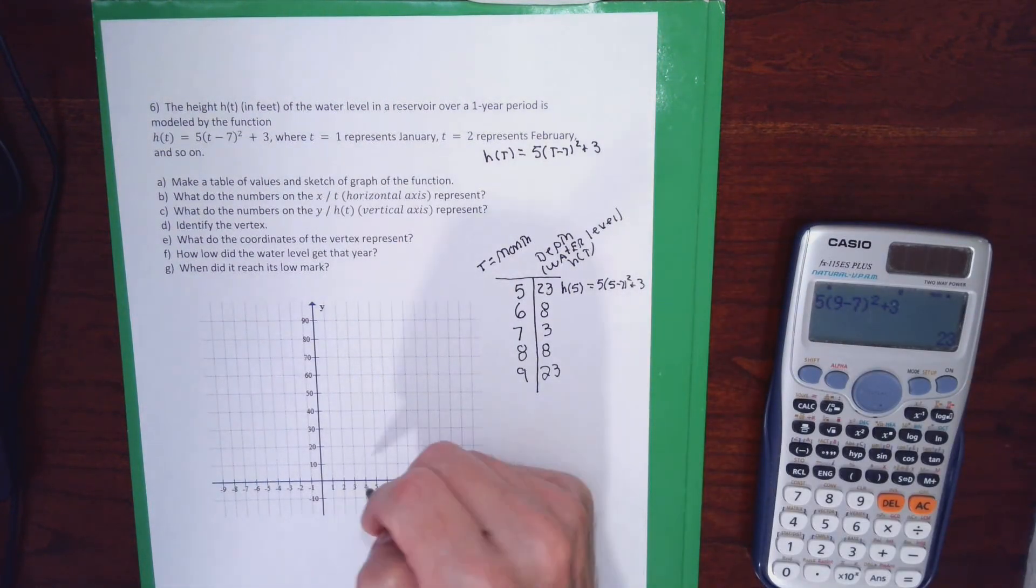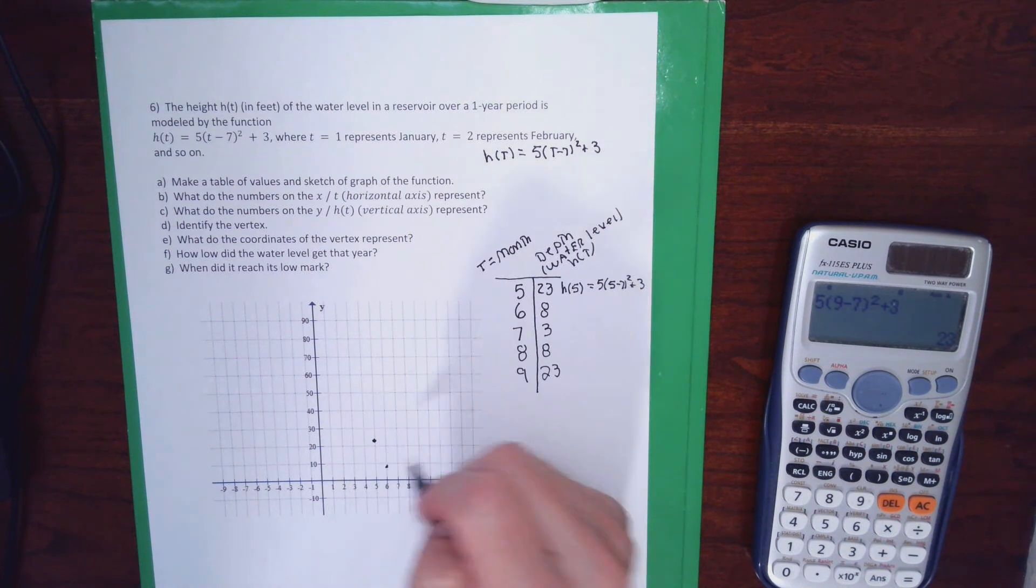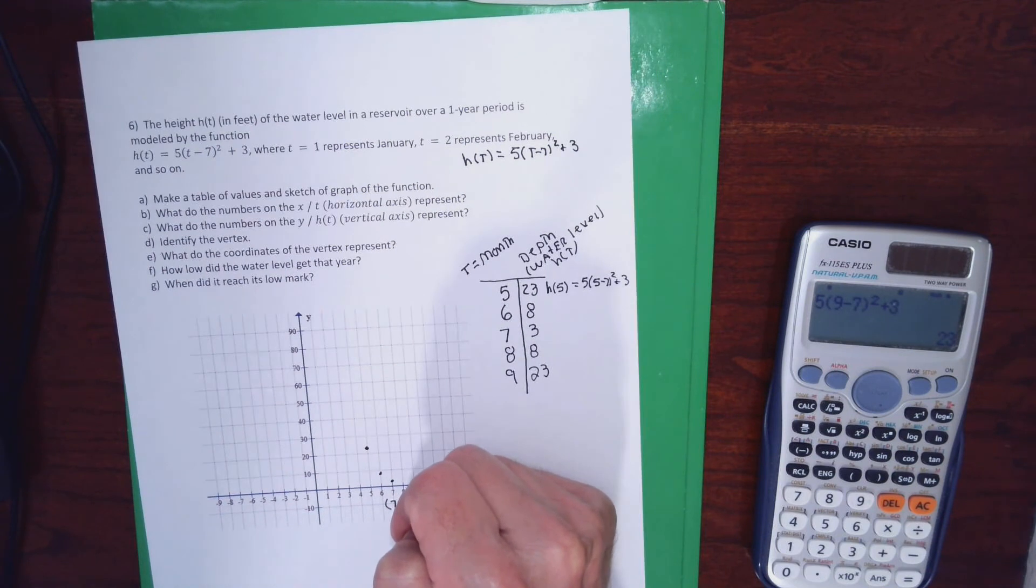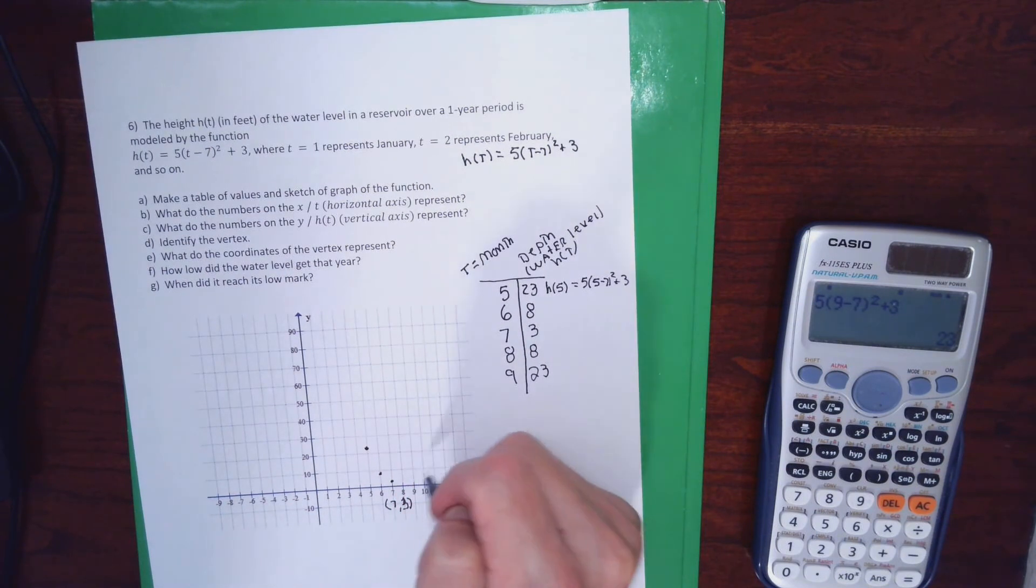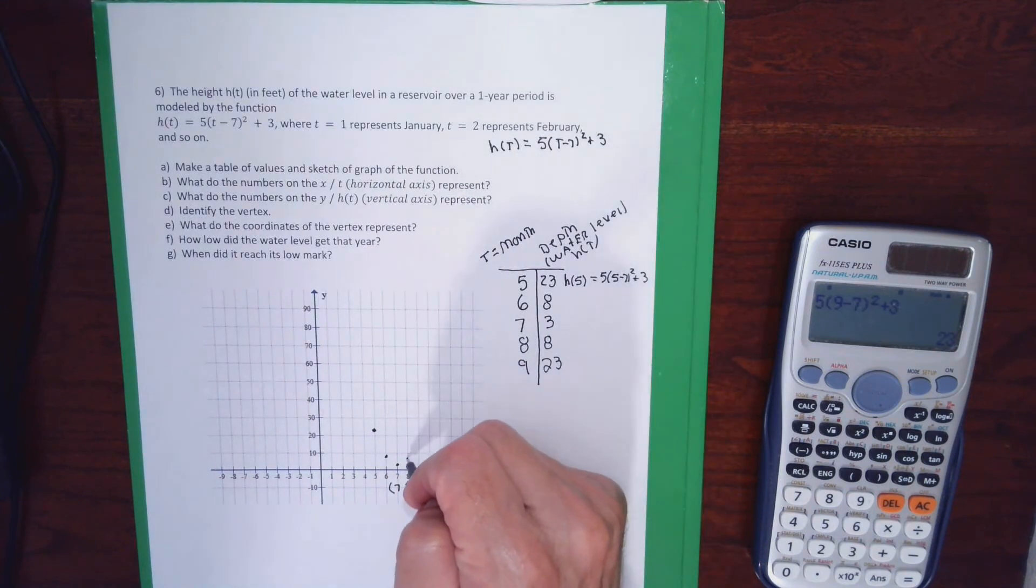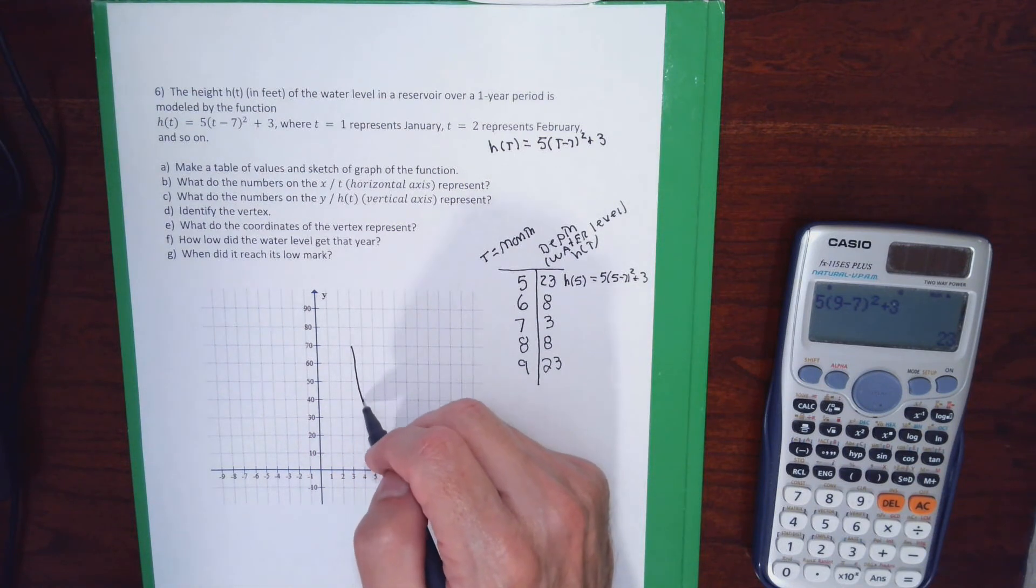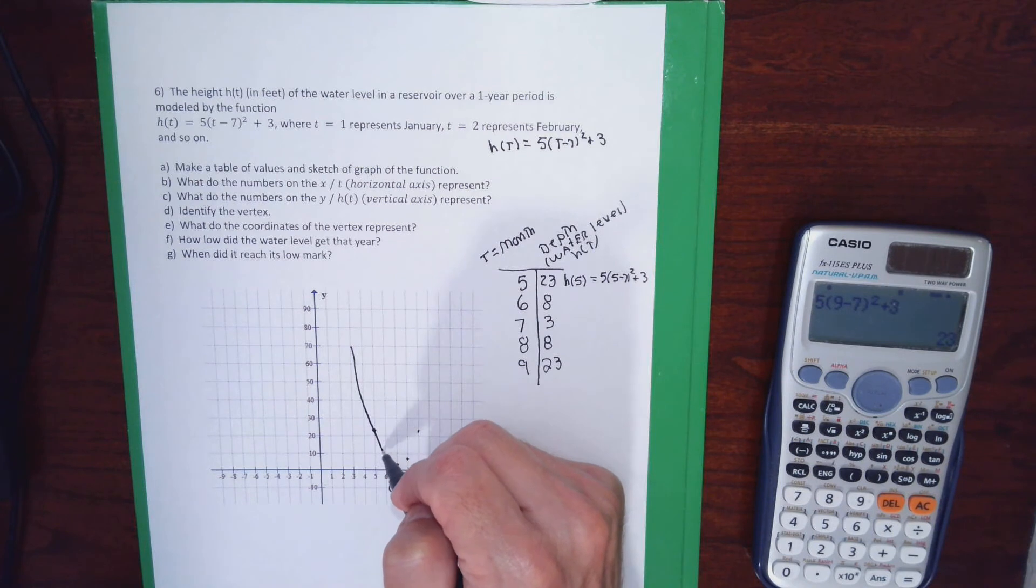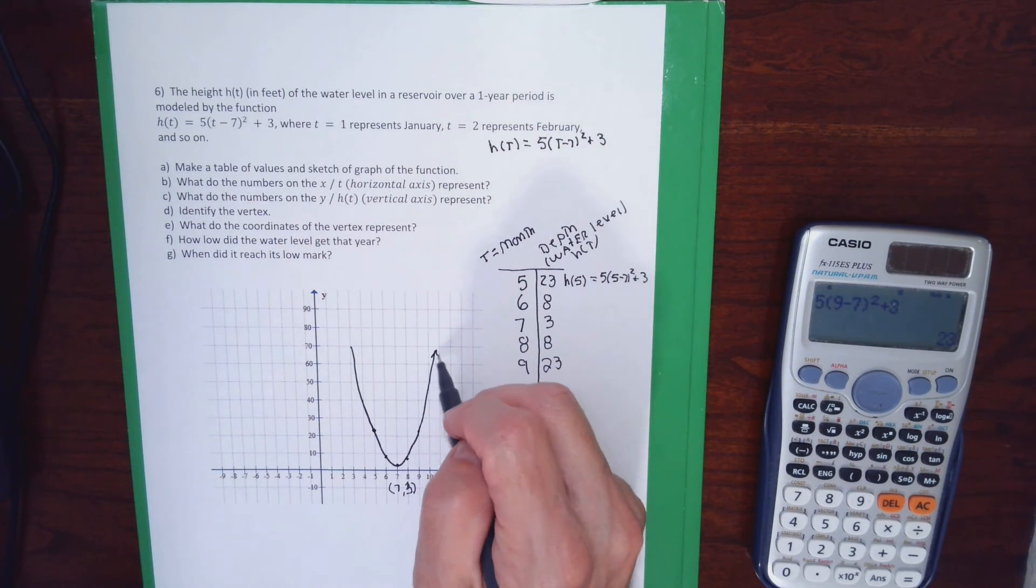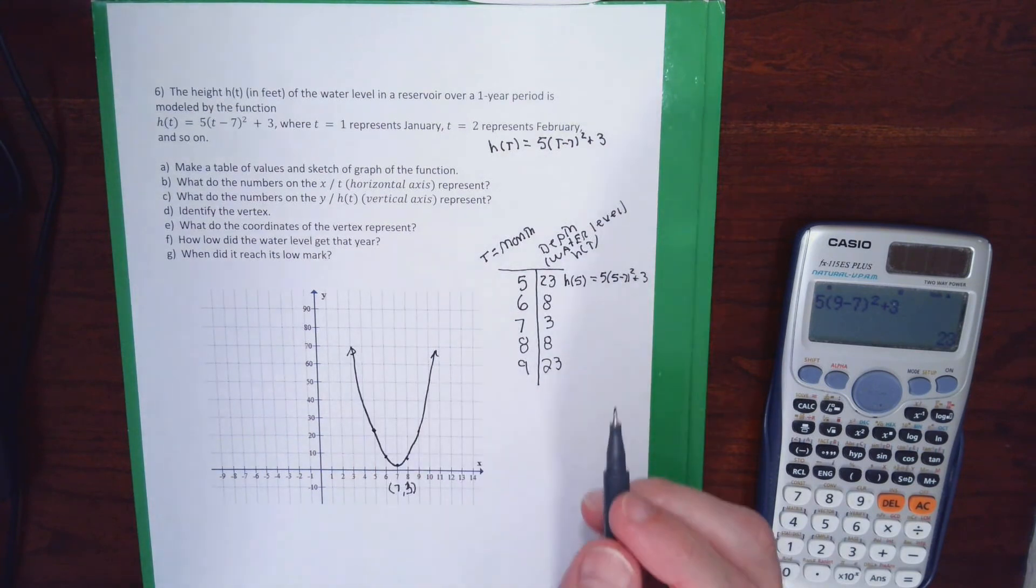Now I'm going to sketch a graph. So I'm going to do the point 5 comma 23, I'm just estimating. 6 comma 8. 7 comma 3, that's the vertex. Maybe I'll actually write the name of that down. And then you see the nice symmetry, so I know I have a good set of values. And then 9 comma 23. So my reservoir's depth is going to look something like that. It goes down, down, down, and then in July, and then maybe the rainy season starts and it starts going up again. So that's part A. I've made a table and sketched a graph.